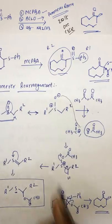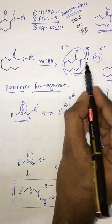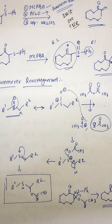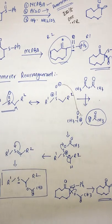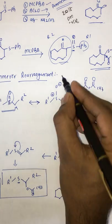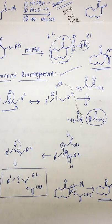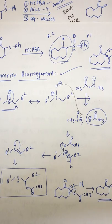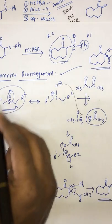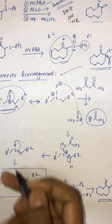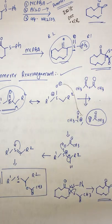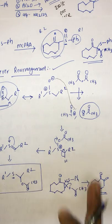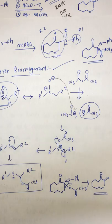To summarize: first MCPPA oxidation takes place on the sulfur, then we have Pummerer rearrangement. This question was asked in 2018, and they will likely keep asking this rearrangement. It's better to remember this mechanism. If you know this, you can write the product directly; then the Na2CO3 step is straightforward.